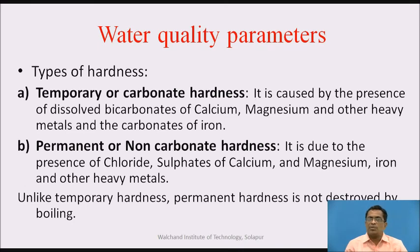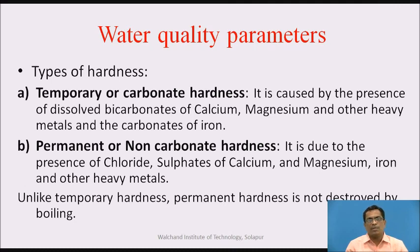Types of hardness: basically there are two types of hardness in water — temporary and permanent. Temporary or carbonate hardness is caused by the presence of dissolved bicarbonates of calcium, magnesium, and other heavy metals, and the carbonates of iron. Permanent hardness is due to the presence of chlorides and sulfates of calcium, magnesium, and other heavy metals. Unlike temporary hardness, permanent hardness is not destroyed by boiling.